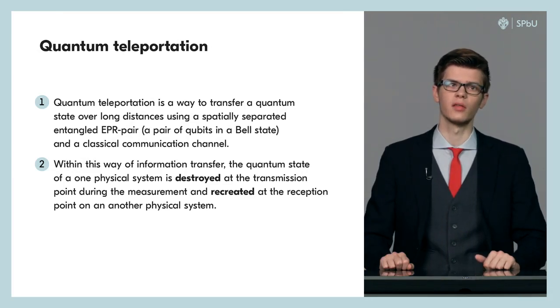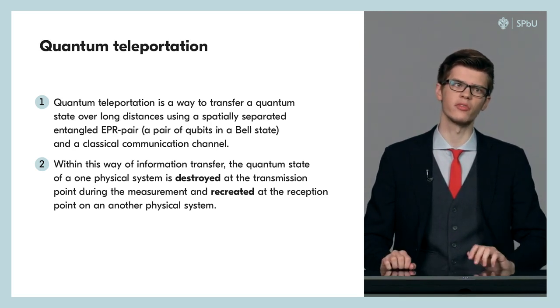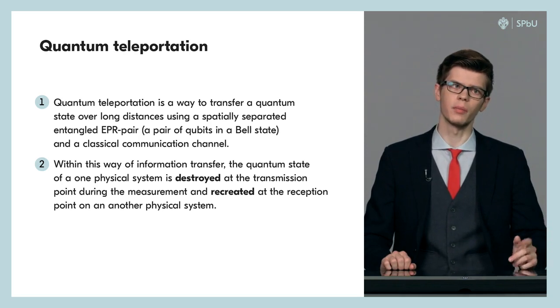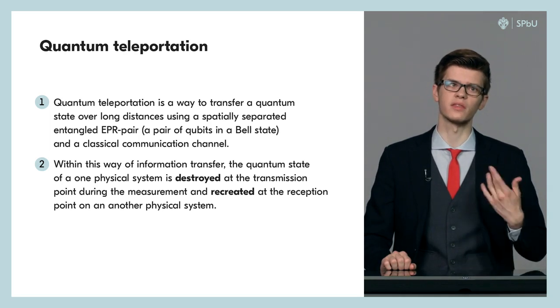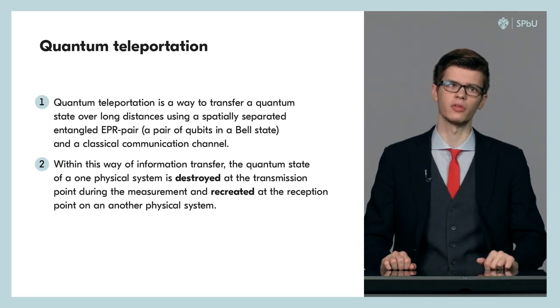In order to perform the task, the protocol of quantum teleportation is being used. Within this way of information transfer, the quantum state of one physical system is being destroyed at the transmission point during the measurement and being recreated at the reception point on another physical system. So Alice has to measure her psi qubit in a special way and then report the results to Bob. Then Bob can use the results to recreate the qubit state, that is to bring the second qubit of the Bell pair to the state psi.